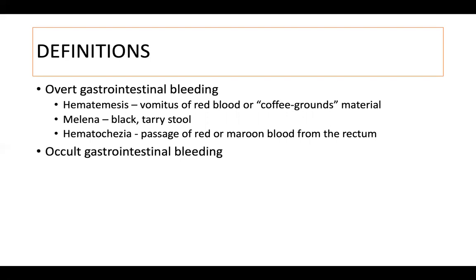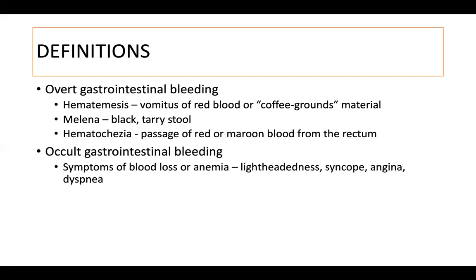Occult gastrointestinal bleeding, on the other hand, is bleeding from the GI tract without obvious evidence of bleeding and may just present with symptoms of blood loss or anemia such as lightheadedness, syncope, angina, or dyspnea, or laboratory evidence of iron deficiency anemia or a positive occult blood test.